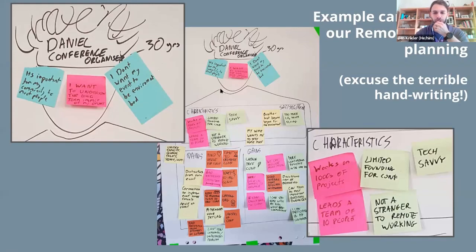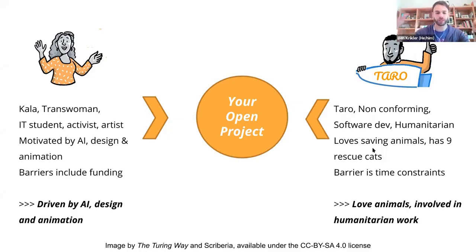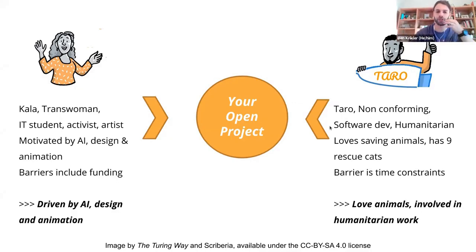A really crucial point is you don't just do this once. You often have to build many personas because there'll be many different people in your community. On one hand you may need to think through the student side of it, but on the other hand you may want to think through professors or other types of person. You will often have to come up with multiple different personas that really try to capture the full scope of who you want to include. You can use the canvas or just write a couple of paragraphs.